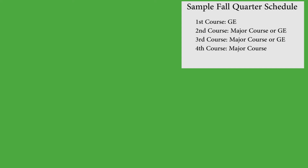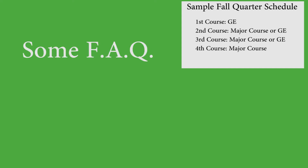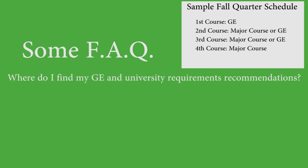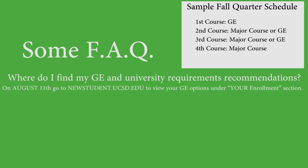You may have some frequently asked questions by now, so let's address them. The first one may be: where do I find my GE and university requirement recommendations? On August 11th, you should go to the New Student website under the Your Enrollment section to see what Muir College advisors have recommended for your GE or university requirement options.